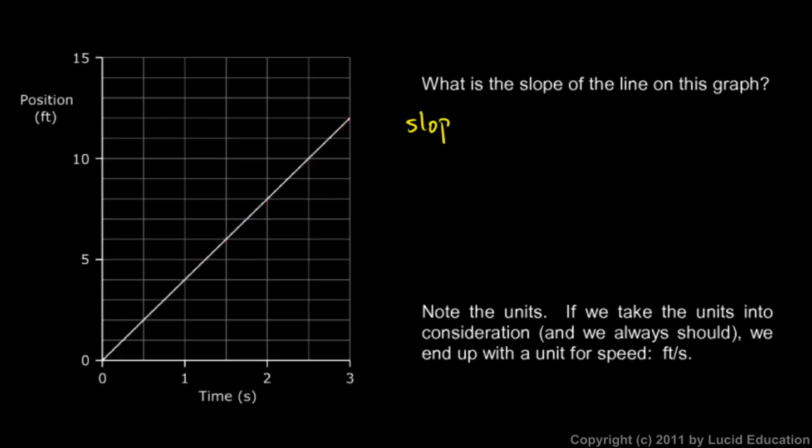Well, slope is always rise over run. So we just need to pick two points and calculate the slope. Let's just take this first point and the second point. That'll be easy. We'll look at that little segment.